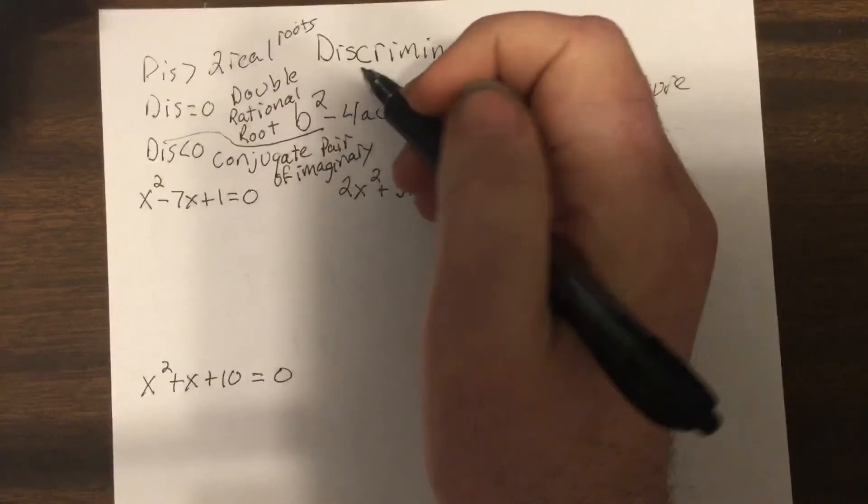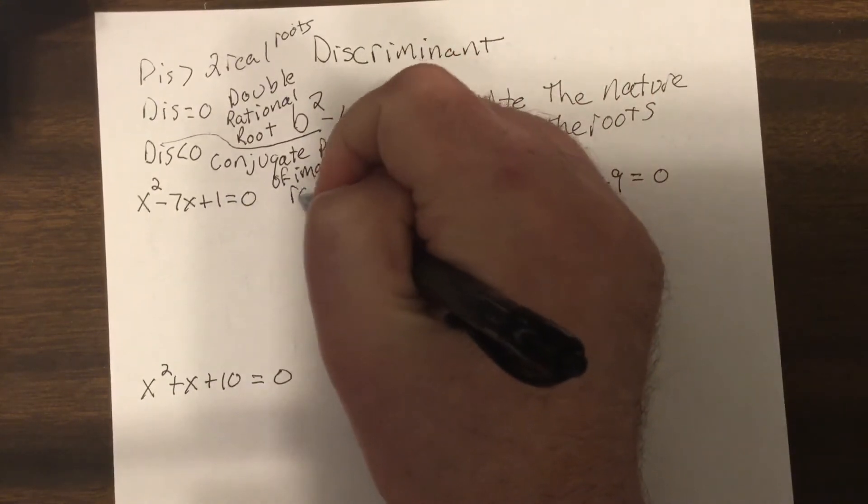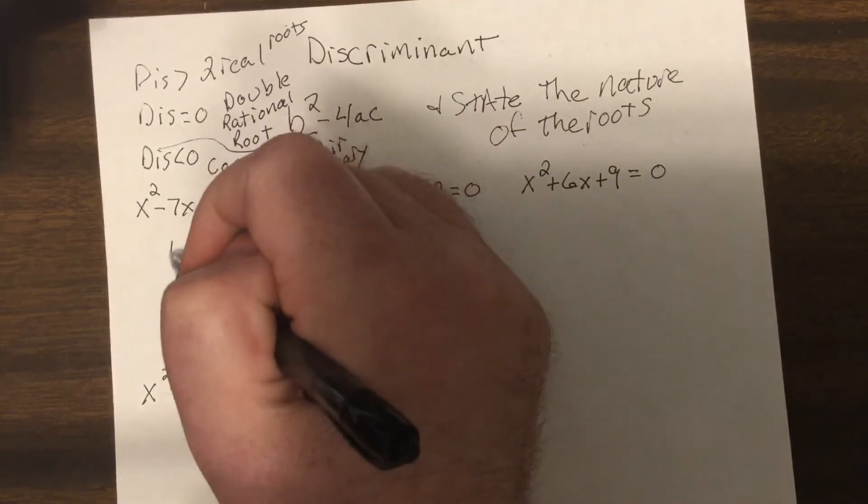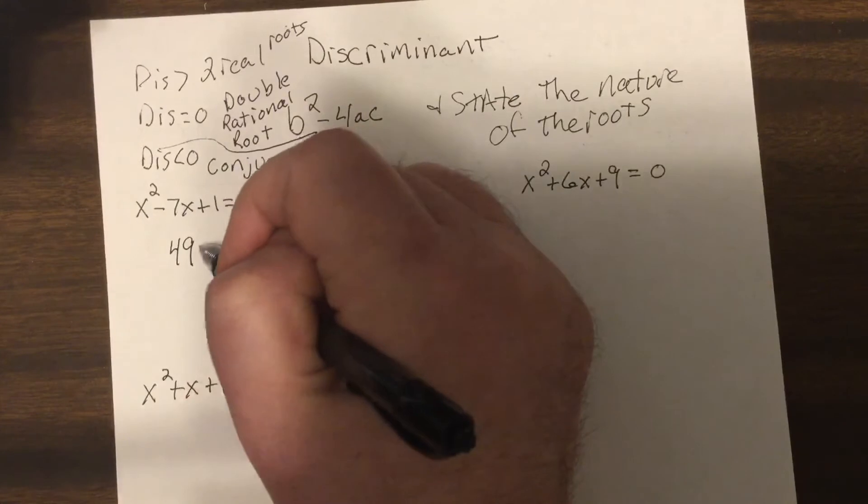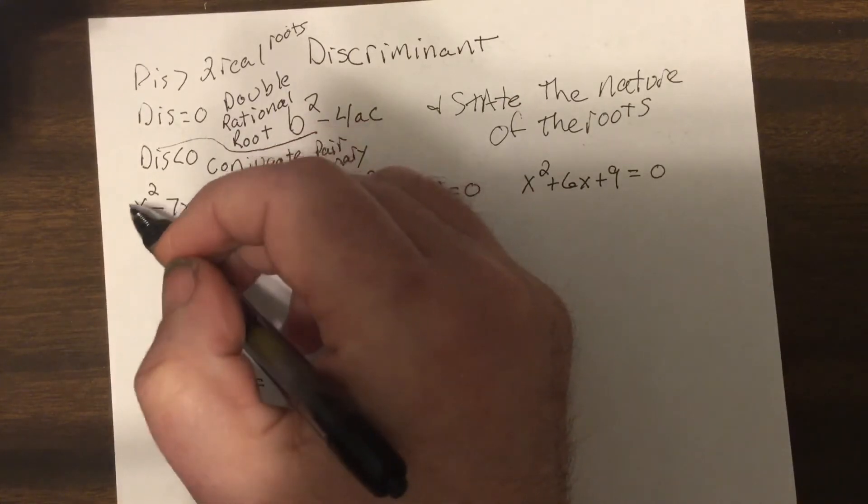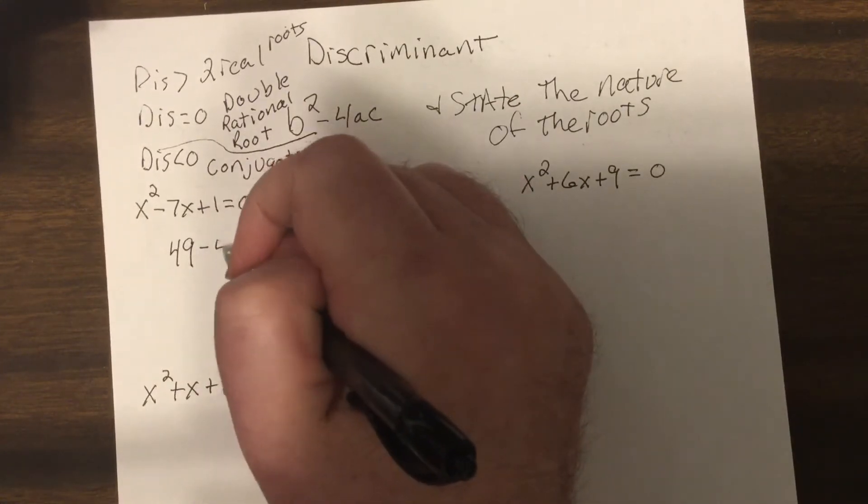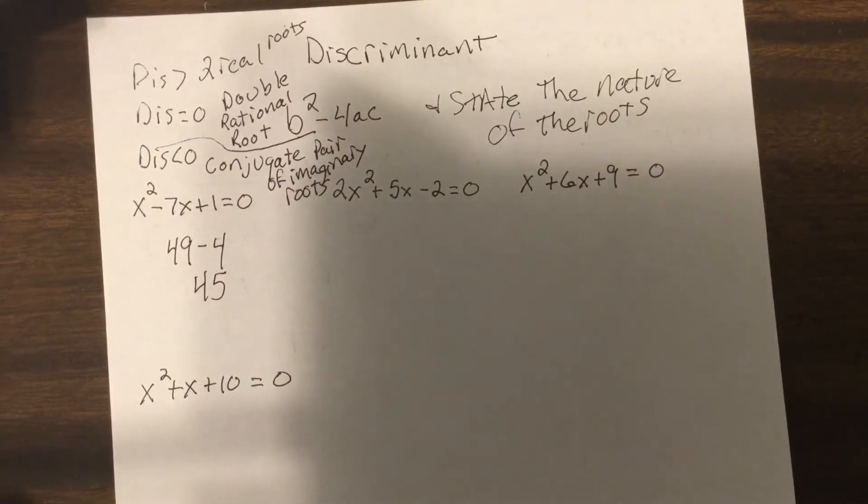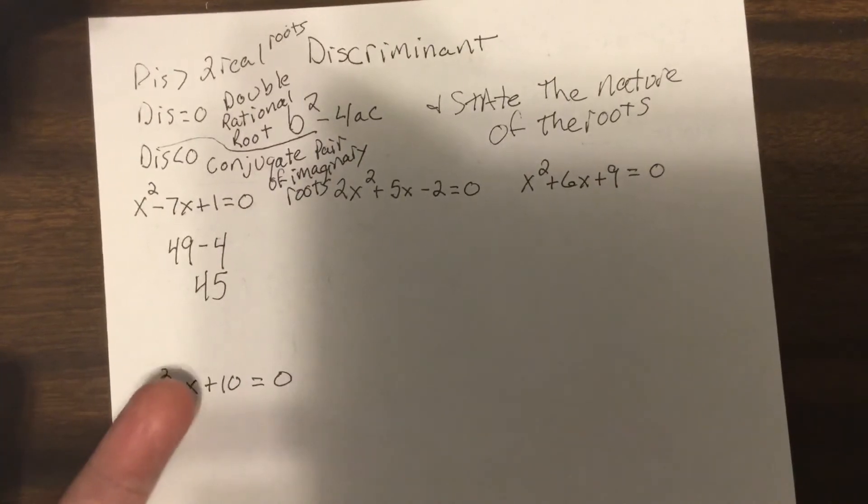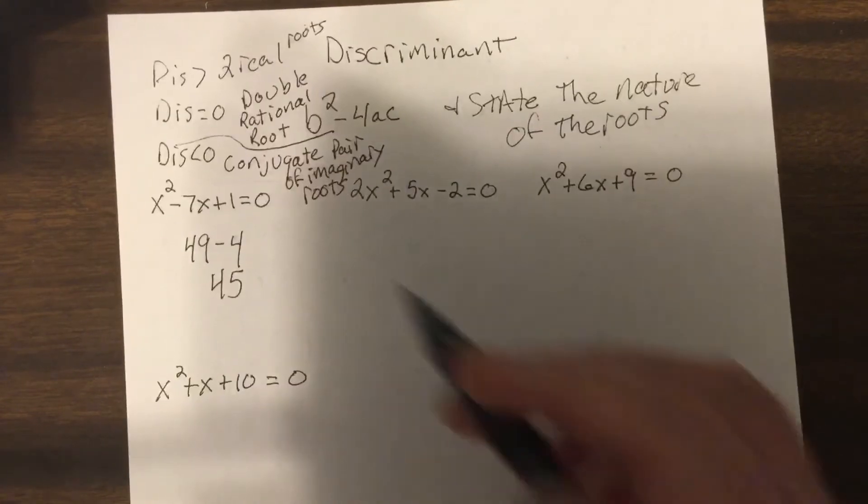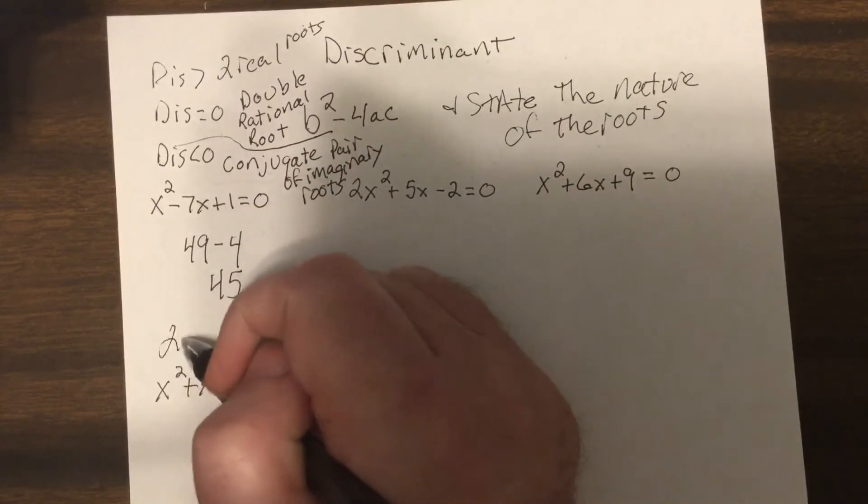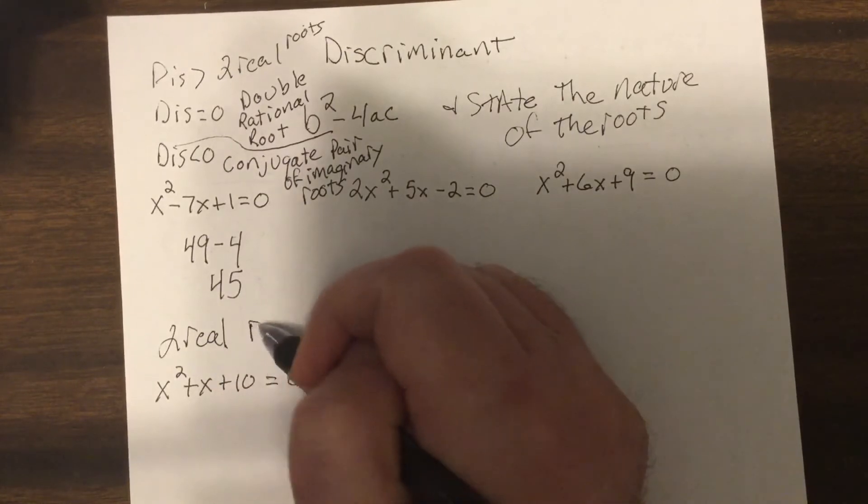So for this problem, b is negative seven, so b squared is 49, minus 4ac, so four times one times one is four, so that's 45. Now the 45 itself doesn't really matter to us, what matters is, is it positive, is it zero, or is it negative? And in this case, 45 is positive, so the nature of the roots would be two real roots.